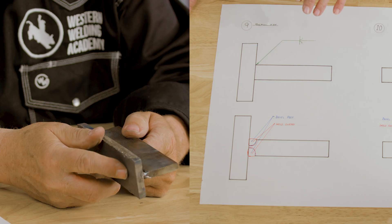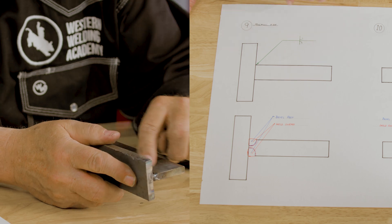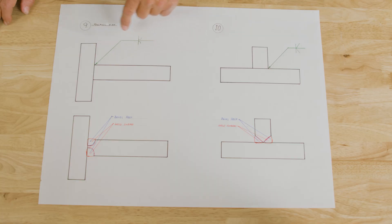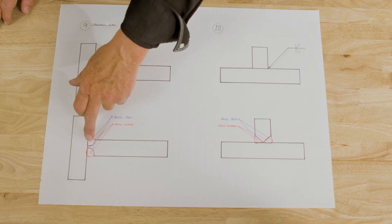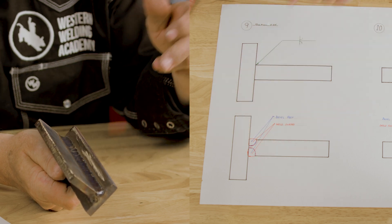Number nine, again, it's a similar situation. Most of the time, this would be machined in the double J. And the reason that is, it's very hard to make that work with a grinder.